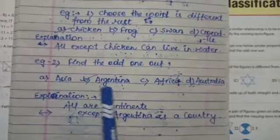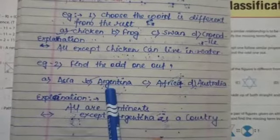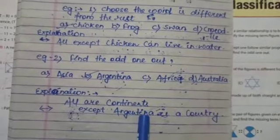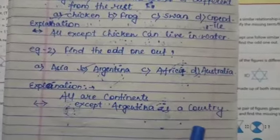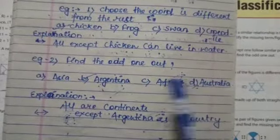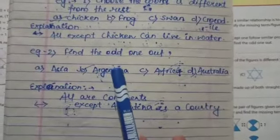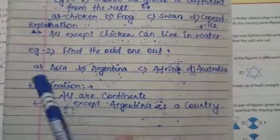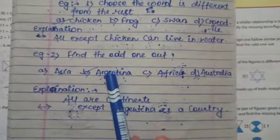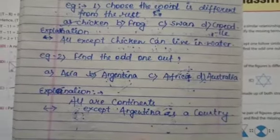Next example, find the odd one out. Your options are Asia, Argentina, Africa, Australia. The correct answer is Argentina. All are continents except Argentina, which is a country. Argentina is the odd option.